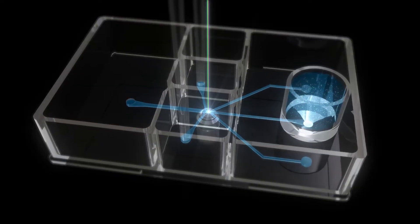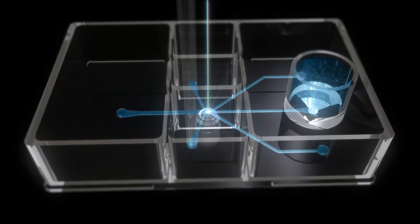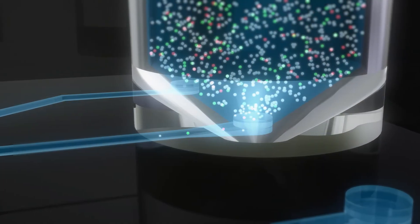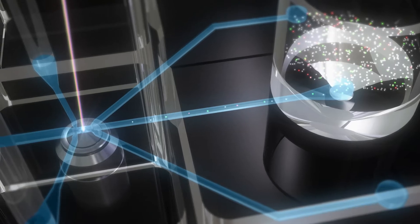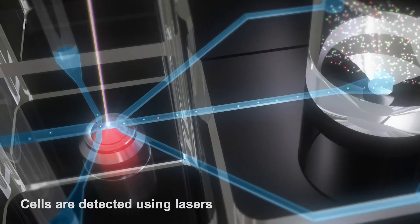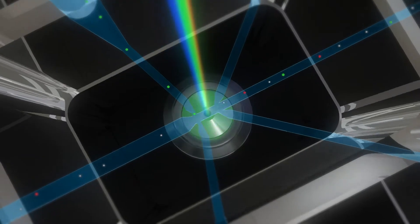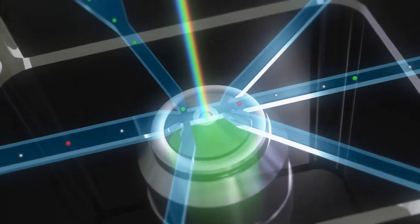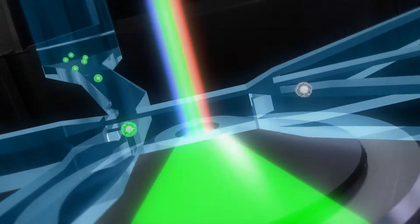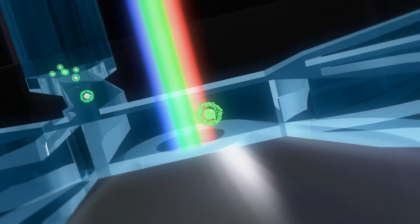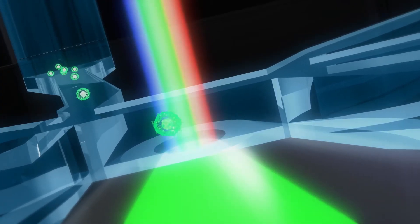When measurement is started, the sheath fluid and sample begin to flow down from their respective reservoirs, and the cells are irradiated by lasers. When a cell is irradiated, fluorescence and scattered light are generated, and these are measured by detectors under the chip.